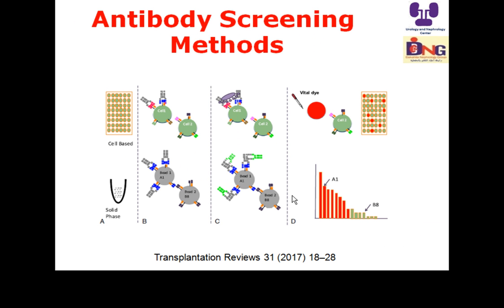Regarding screening methods — how to screen for antibodies is very important. If the recipient has antibodies against HLA antigens of the donor, this is critical and may lead to hyperacute rejection, the catastrophic outcome that in the era of immunology labs we no longer see. Cell-based platforms incorporate a panel of lymphocytes from the potential donor pool, with each donor's cell in a single well. Solid phase assays use purified HLA antigens bound to the surface of a bead.